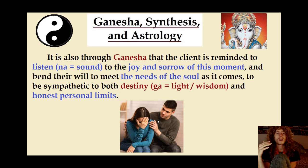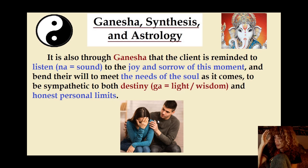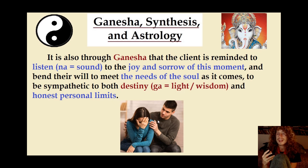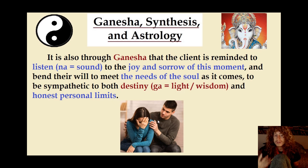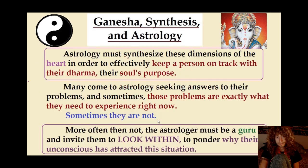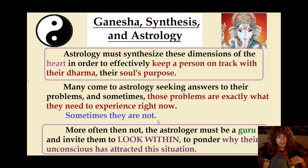Through Ganesha, the client is reminded to listen to the joy and sorrow of this moment. The astrologer has to listen to the client to know — even though they are going through necessary karma — and really feel and teach the person to feel their limits, to feel their honest personal limits and to meet the needs of the soul as it comes. This is balancing destiny, Ganesha, with Na — the sound, the heart, the moon, your honest personal limits. Astrology must synthesize these dimensions of the heart in order to effectively keep a person on track with their dharma, their soul's purpose.